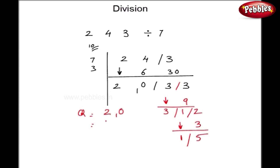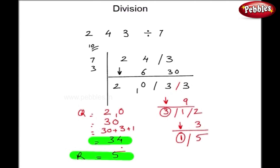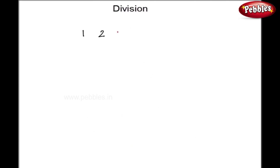What is our quotient? I will add this 1 to 2, so it is 30. Now to this 30 I have to add this 3 and 1, so my quotient is 30 plus 3 plus 1, that is 34. And my remainder — the last figure — is 5. So my quotient is 34 and remainder is 5. I'll take one more example: 121 divided by 8.